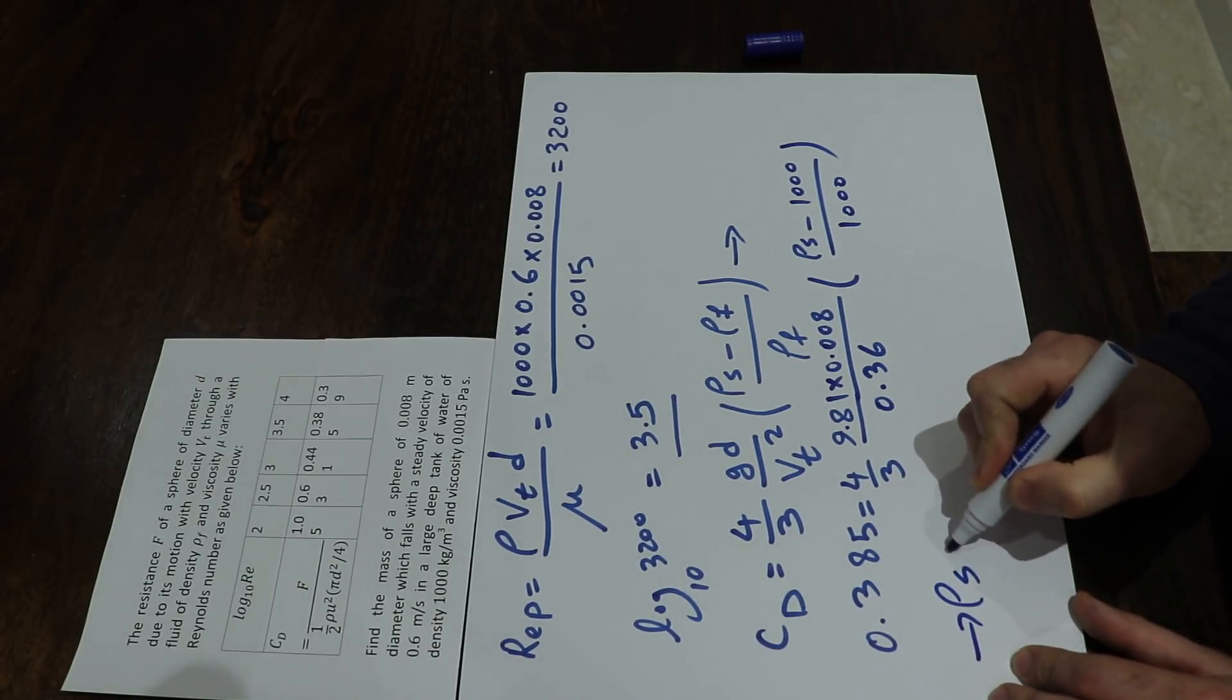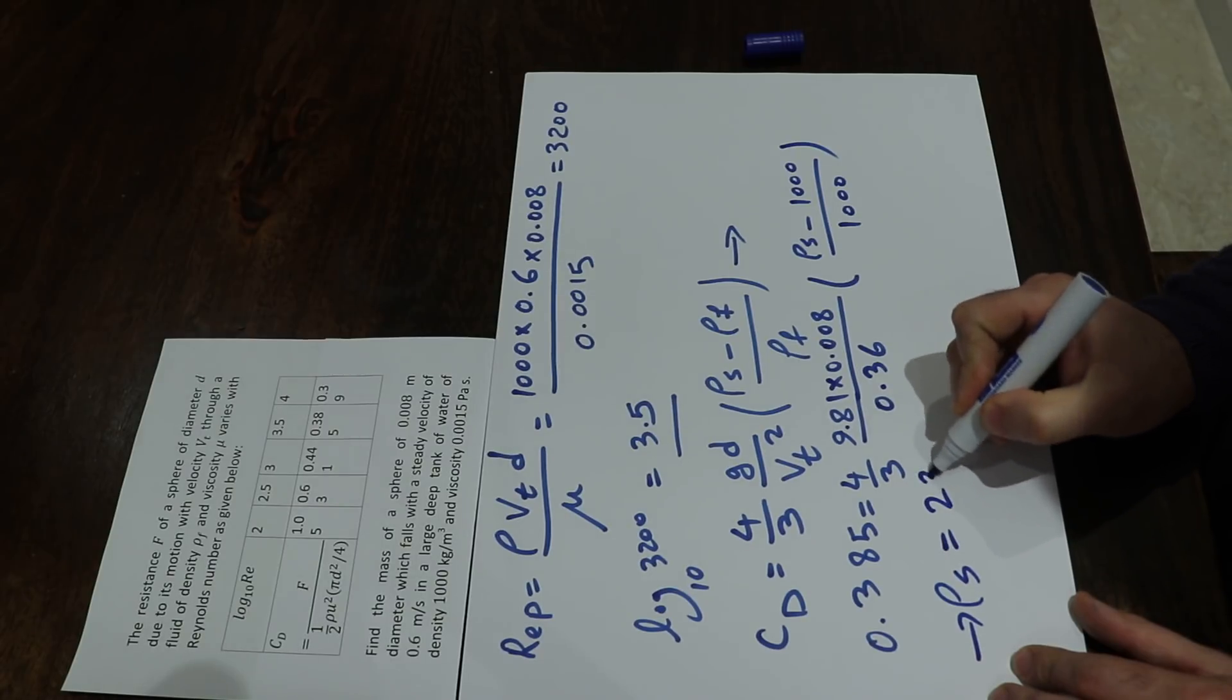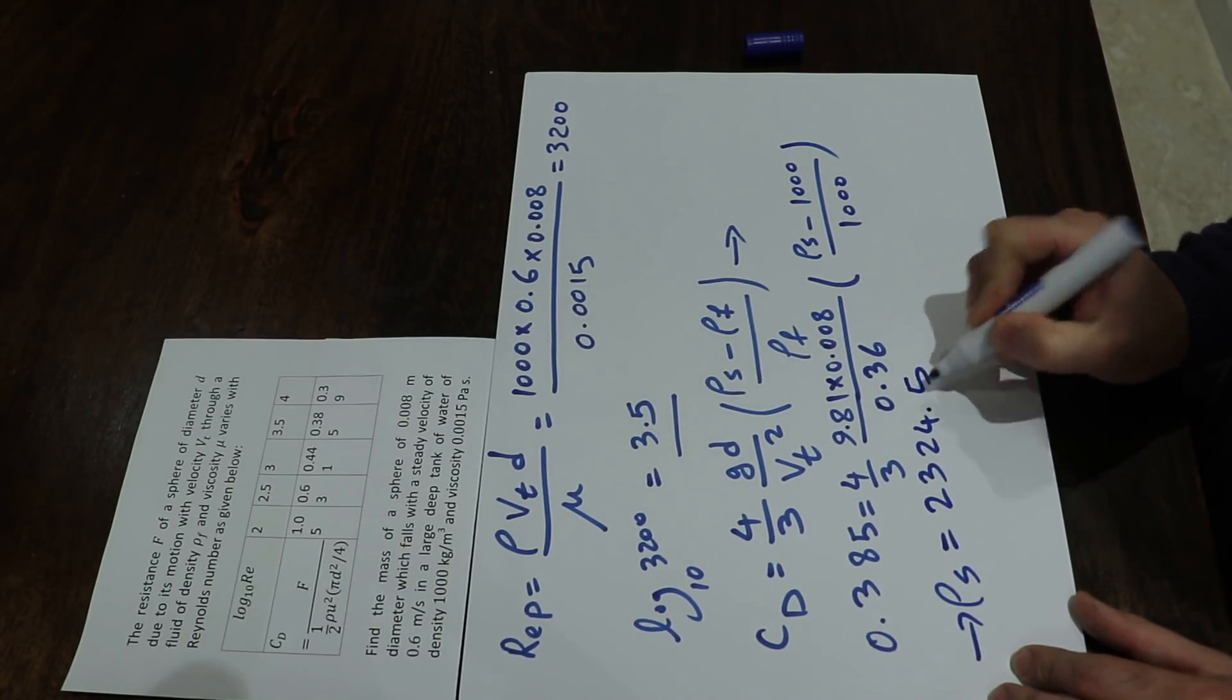Therefore, the density of the particle equals 2,324.5 kg/m³.